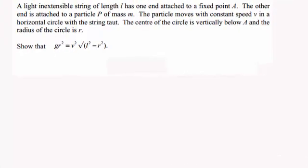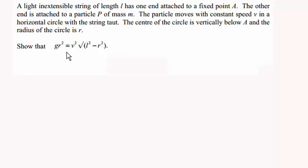Hi there. This is an example on what we call a conical pendulum. We have a light inextensible string of length L, with one end attached to a fixed point A, and the other end attached to a particle P of mass M. The particle moves with a constant speed V in a horizontal circle with the string taut, and the centre of the circle is vertically below A, with radius R. We need to show that gR² = V² times the square root of L² minus R².